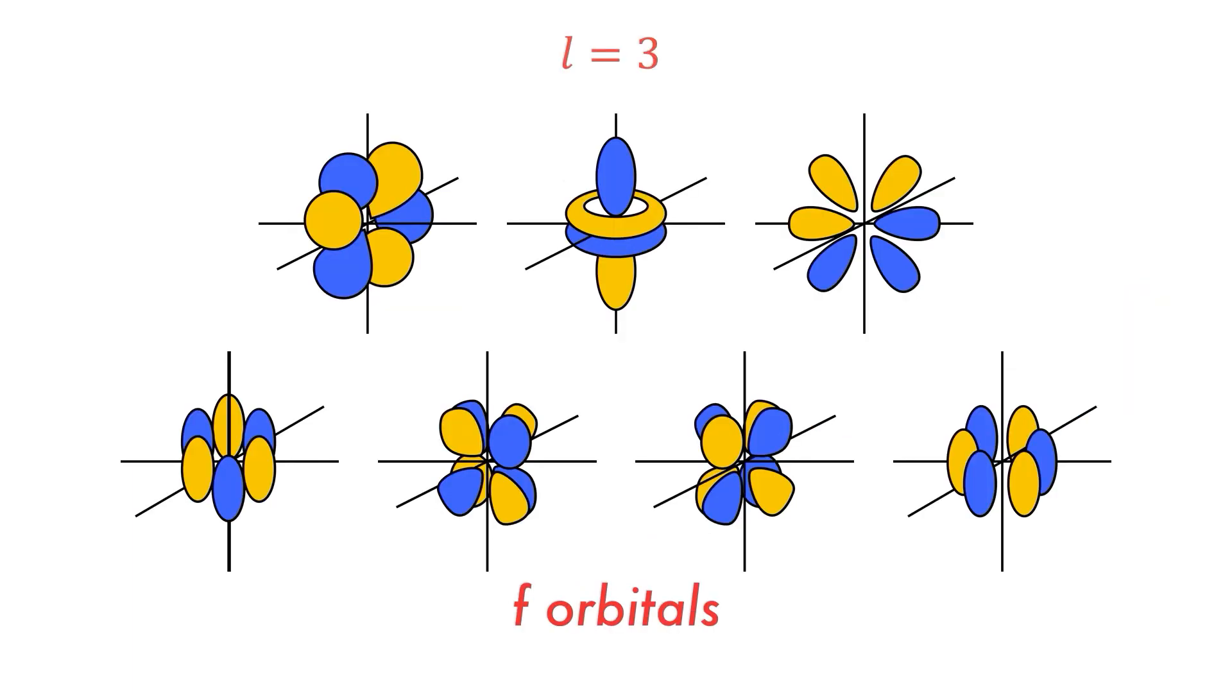The last set of orbitals are the f orbitals, which have an L value of 3, and there are seven of these per energy level.